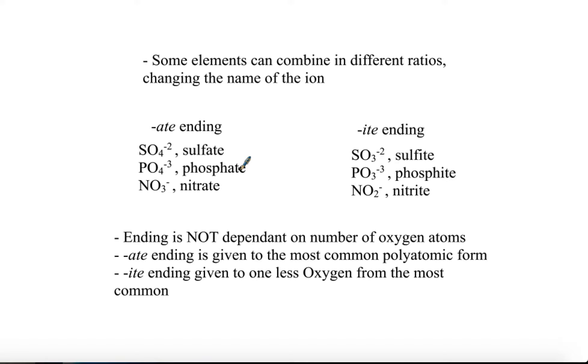When we go to name these polyatomic ions, these names have already been assigned, and they're assigned based on how common they are and the fact that some of these elements can actually combine in different ratios. What I mean by that is that these polyatomic anions that have an -ate ending to them are the ones that actually appear the most common, so basically the ratio of the two elements that appear the most common.